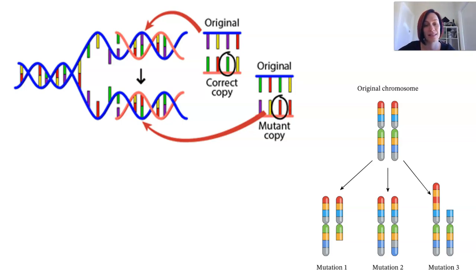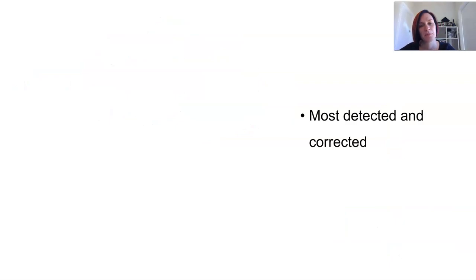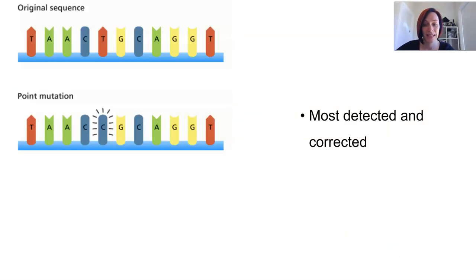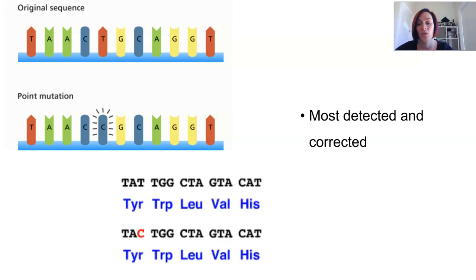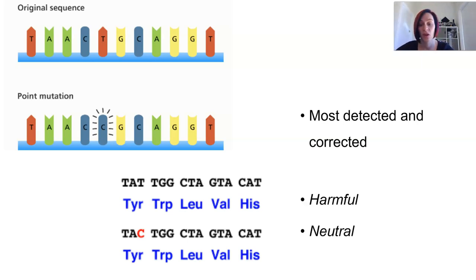We'll be discussing changes in the DNA sequence in this lesson, with more on chromosome abnormalities in future lessons. Most mutations in the DNA base sequence are detected and corrected by enzymes during DNA replication. Those that don't get picked up are quite rare and can go one of three ways: they can lead to harmful results, be neutral with no change, or actually be beneficial to an organism.